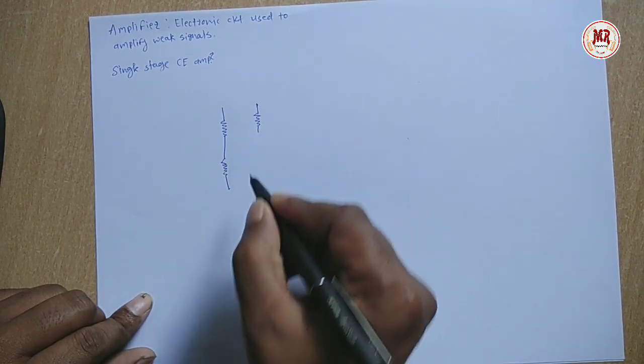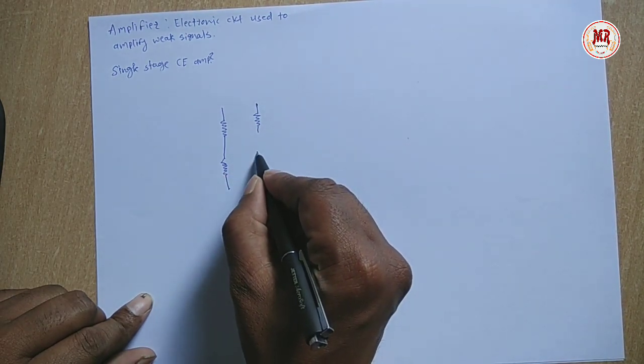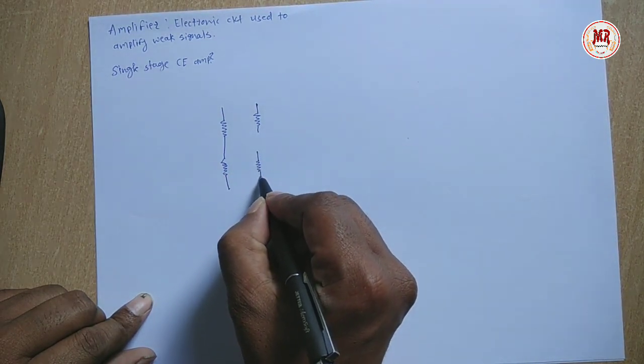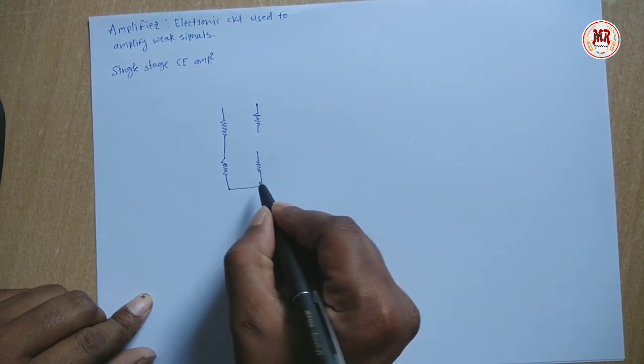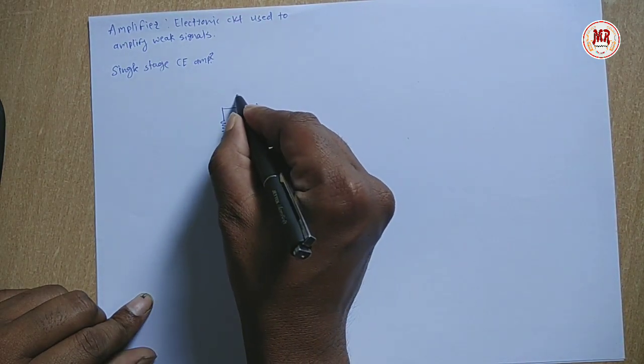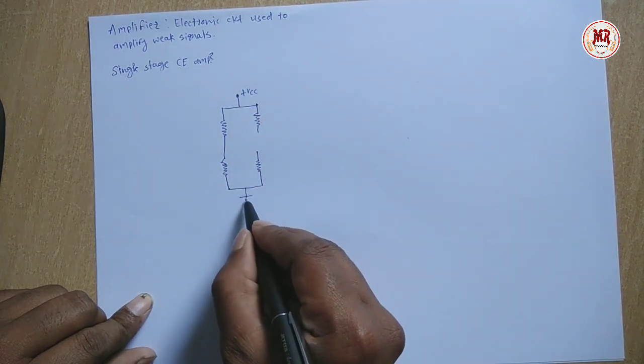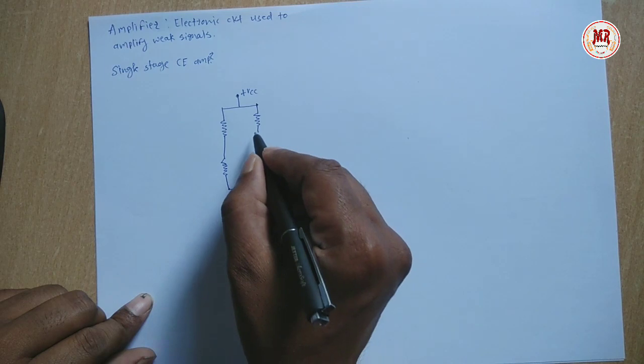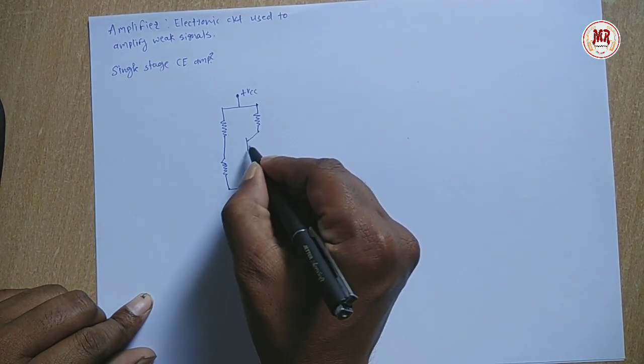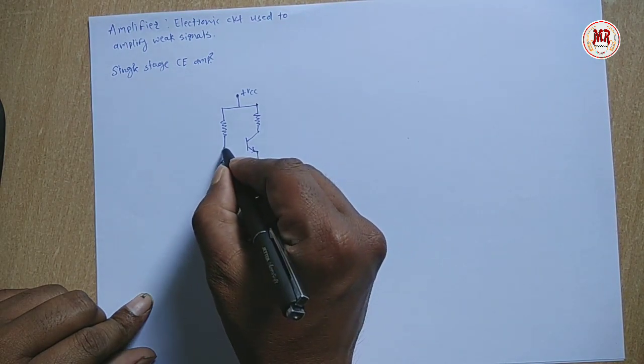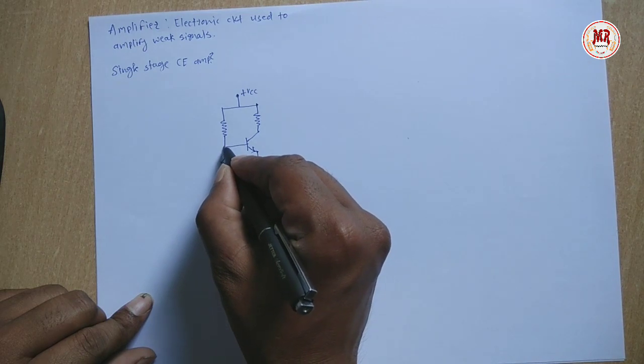This is the easy method to draw the circuit of single stage CE amplifier. First draw four resistances. Then plus VCC, ground, transistor. Most preferably NPN transistor.